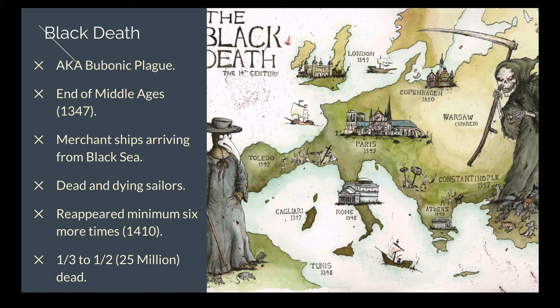The Black Death was also known as the bubonic plague — the main plague affecting Europe at the end of the Middle Ages. Around 1347, it was brought to Europe on merchant ships coming from eastern ports on the Black Sea. It followed existing trade routes, so some areas were hit harder than others. The dead and dying sailors from our opening story infected others who tried to help them, and it spread throughout Europe that way.